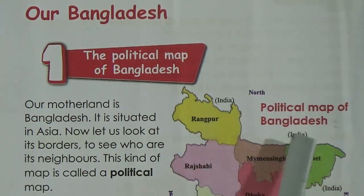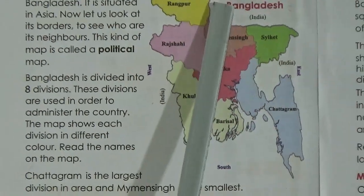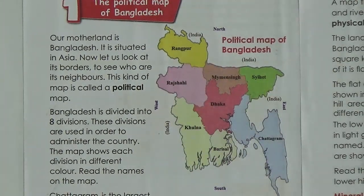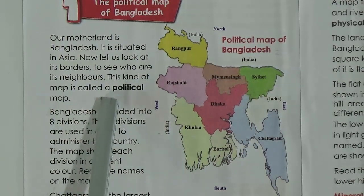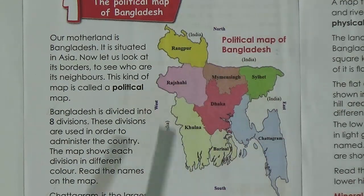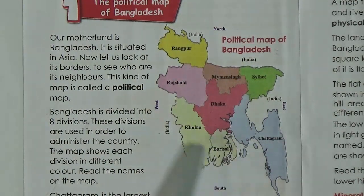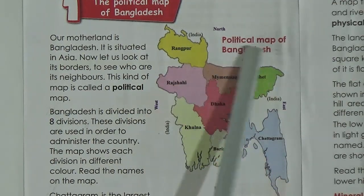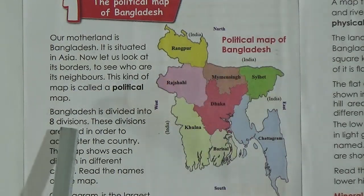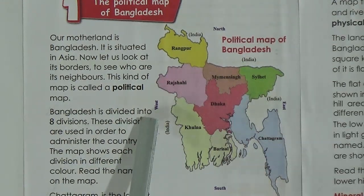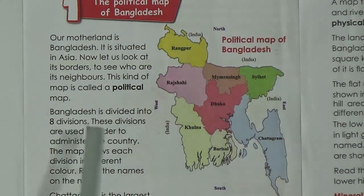Look at the map — here you find India on this side, India here, India there. It means in the north, west, and east our neighboring country is India. This kind of map is called a political map — the map from which we can learn about our borders and neighboring countries. Bangladesh is divided into eight divisions.